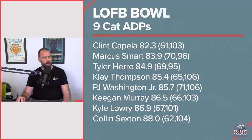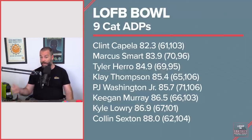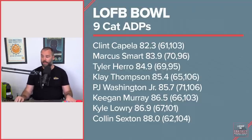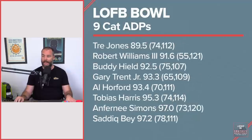Kyle Lowry — ADP of 87 — went at 67, which is probably going too high, but as low as 101. Anytime you can get Lowry in the 80s I think it's good. Colin Sexton at 88 with a 62 to 104 range, and Trey Jones at 89.5 with a 74 to 112. Trey Jones outside the top 100 — you should love it.